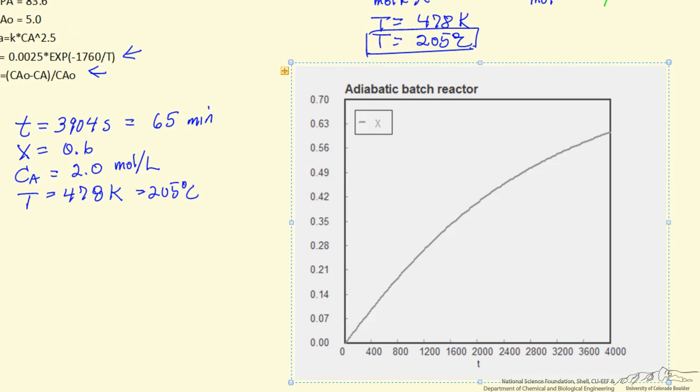And this is a plot of conversion on the y-axis, so this is conversion versus time, showing we get to 60% conversion here, and it shows how conversion changes as a function of time. So this is the output from the POLYMATH program when we solve these ordinary differential equations.